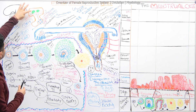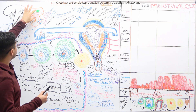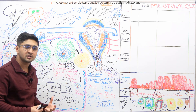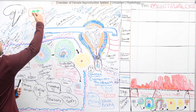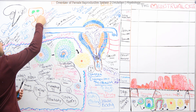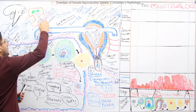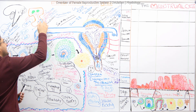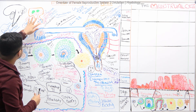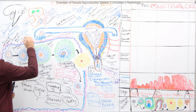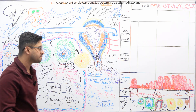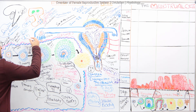From the hypothalamus — especially from the arcuate nucleus — there are cell bodies for synthesizing the hormone called gonadotropin-releasing hormone (GnRH). This GnRH comes through the hypothalamic blood vessels and stimulates the gonadotropin cells, shown here in blue, which release follicle-stimulating hormone (FSH) and luteinizing hormone (LH).